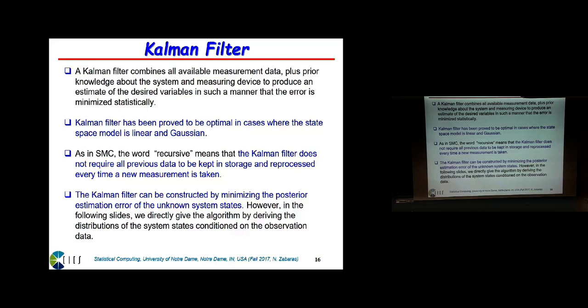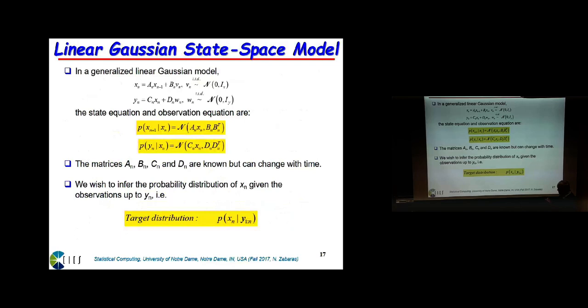The original references were based on minimization of the posterior estimation error for the state. What I'm going to give you now is a more algebraic derivation. We don't need to recover history — we just need to see the fundamental equations so you can do a comparison with sequential Monte Carlo.